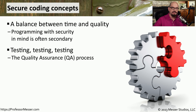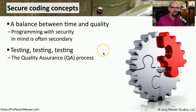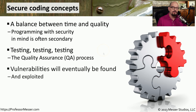Many of these problems with the application code are found in quality assurance, and there's usually a testing process where they'll not only test the functionality of the application, but they'll also run a series of security checks as well. And if those vulnerabilities aren't found during the QA process, then there's probably a researcher or an attacker who will certainly identify those vulnerabilities and, in some cases, find a way to exploit them.